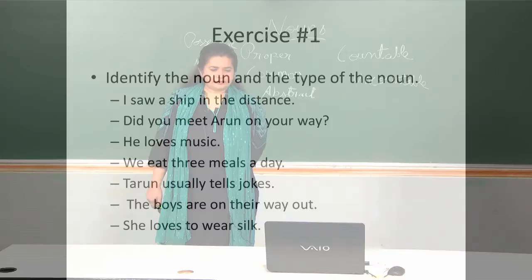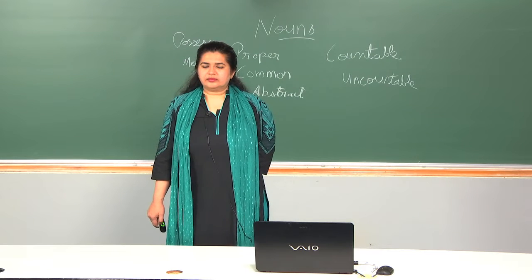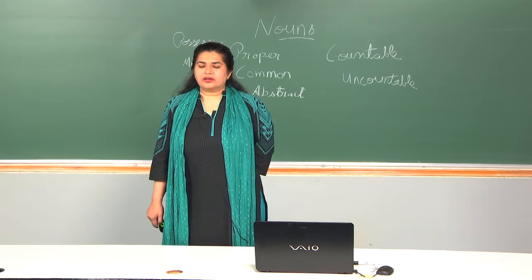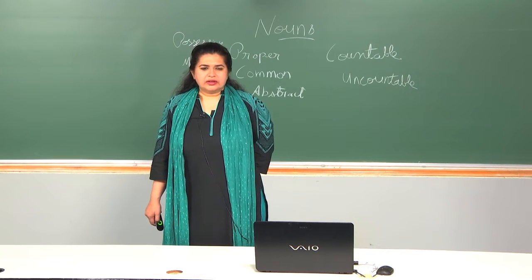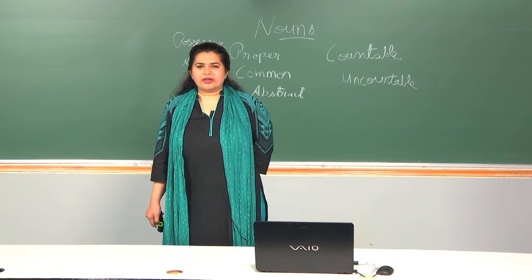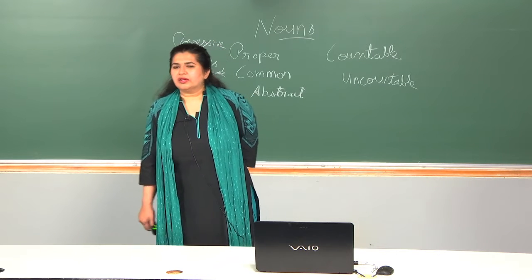Now look at this slide — identify the noun and the type of noun. I will read the sentences: I saw a ship in the distance. Did you meet Arun on your way? He loves music. We eat three meals a day. Tarun usually tells jokes. The boys are on their way out. She loves to wear silk. In the first sentence, ship is a common noun — we do not know which specific ship.